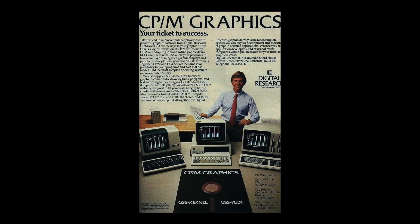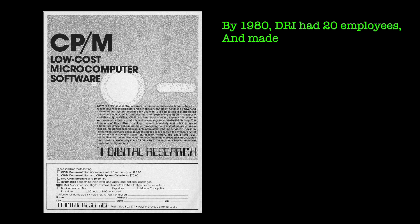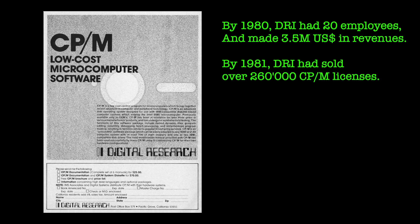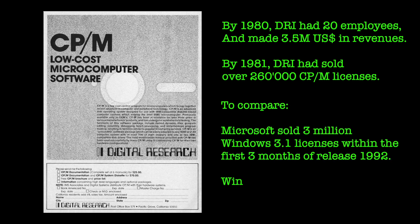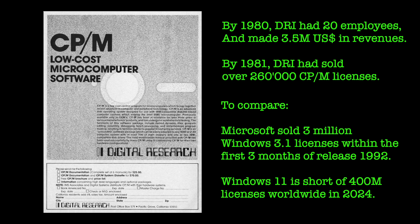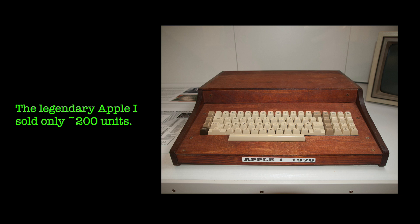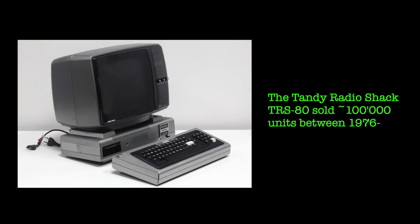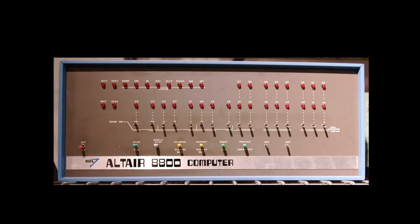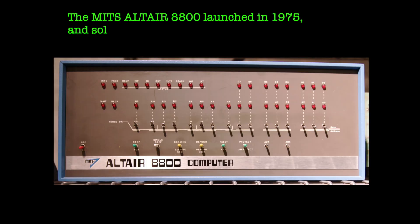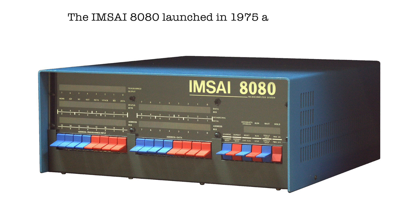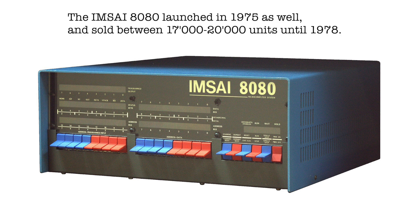CPM was soon licensed to many different vendors. It is said that by 1981, Digital Research had sold somewhat 260,000 CPM licenses. According to some sources even more, but there are no real proven figures. From today's perspective these numbers may sound very small, but one has to consider that during the 70s era, microcomputers had not yet become a mass phenomenon like today. Let's put it into perspective at the example of the iconic Altair 8800, which sold somewhat 25,000 units, or the IMSAI 8080, which produced somewhere between 17,000 to 20,000 units.